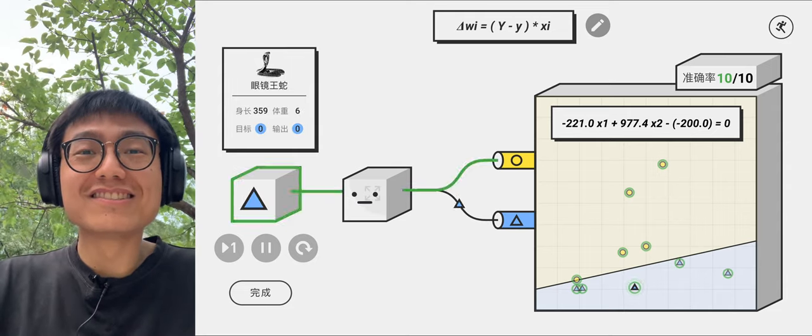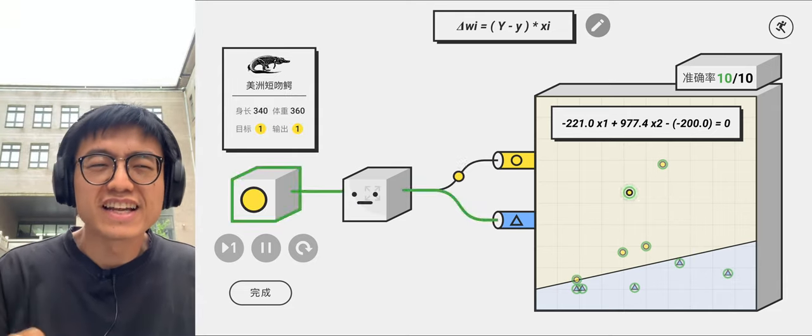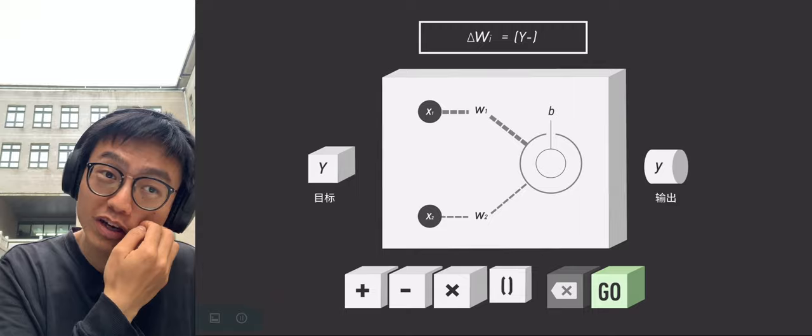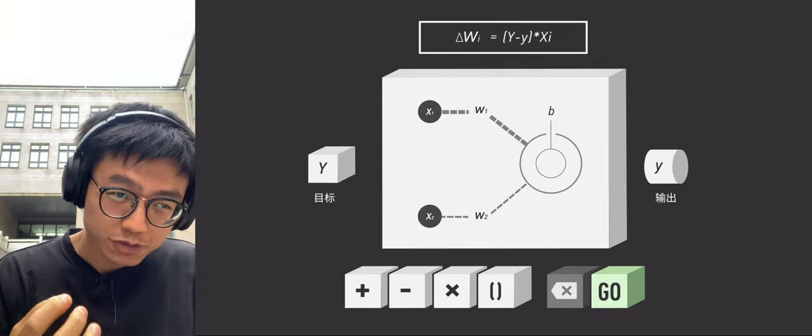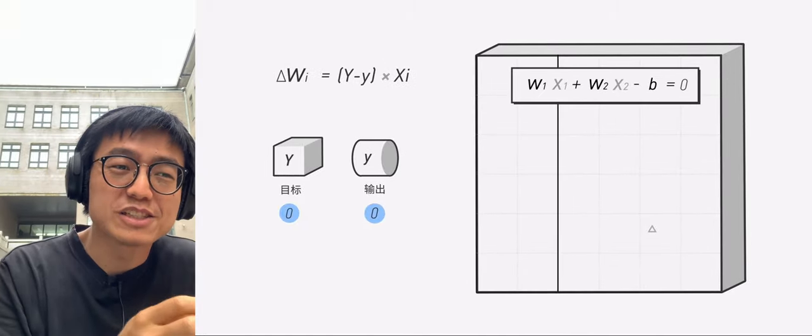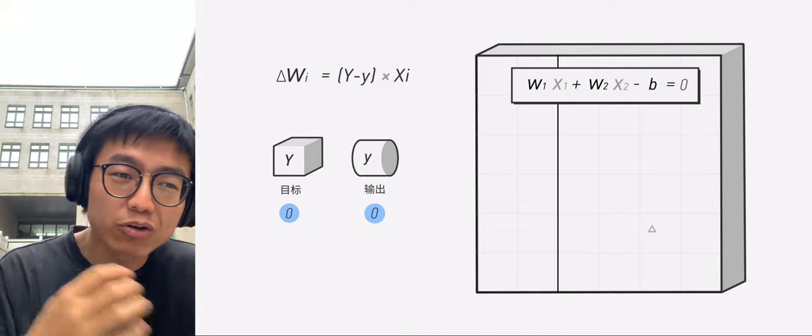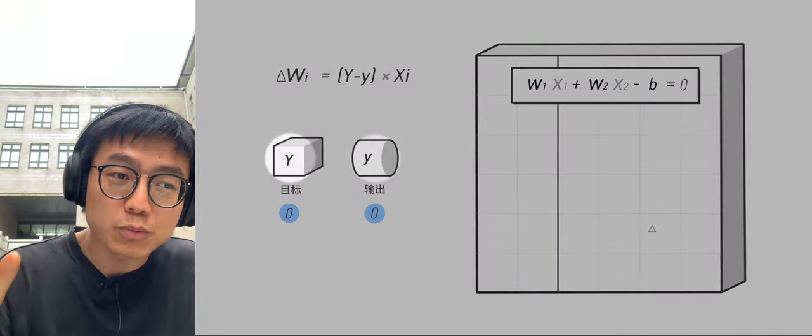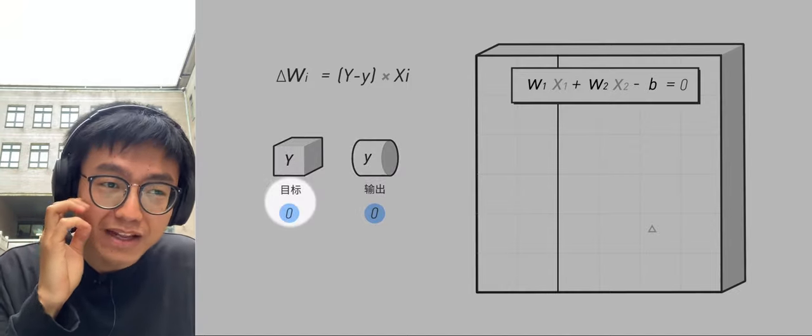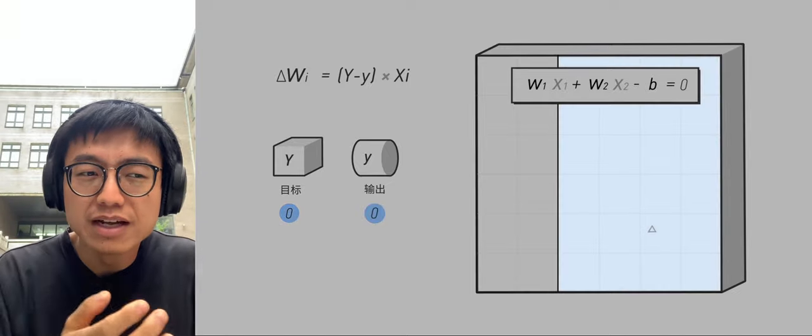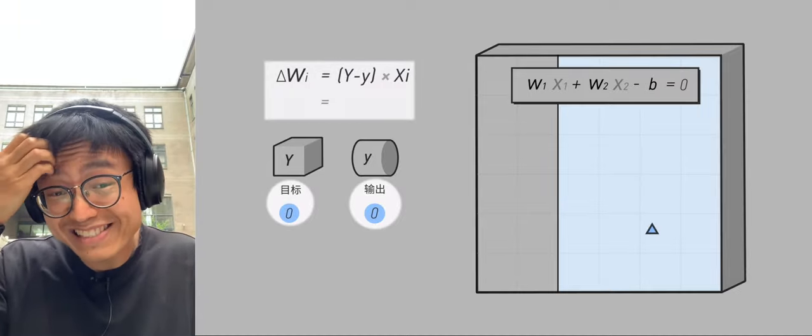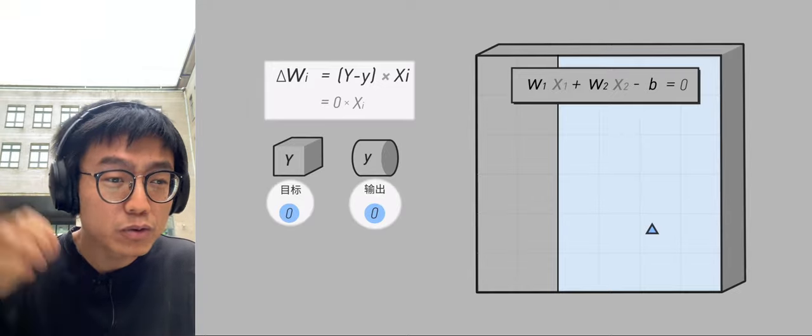What we have just developed is a simple machine learning model. This model cannot only successfully classify crocodiles and snakes, but also recognize numbers. The key to making the machine adjust automatically is to let the machine know whether W is high or low. Uppercase Y and lowercase y are just enough to solve this problem. Uppercase Y is a real value, and lowercase y is an output value. If uppercase Y is the same as lowercase y, then uppercase Y minus lowercase y equals zero. Delta W equals zero.